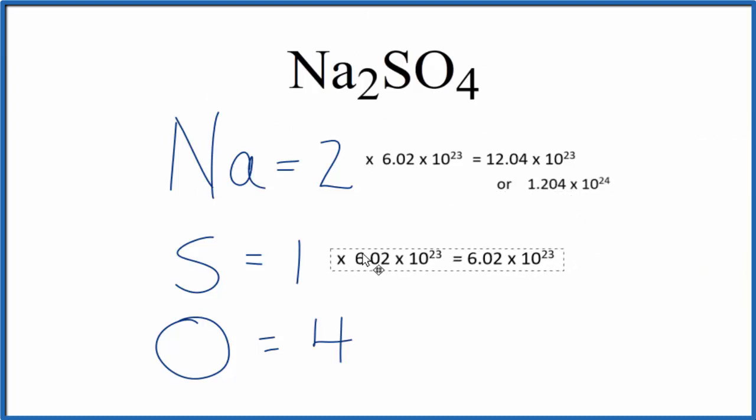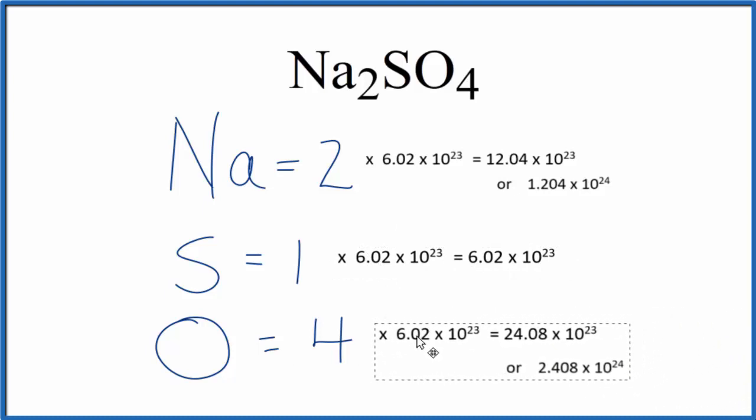If you have only one sulfur, multiply it by Avogadro's number, get this number, and then for oxygens, you could multiply that four by Avogadro's number to figure out the number of oxygen atoms in Na2SO4.